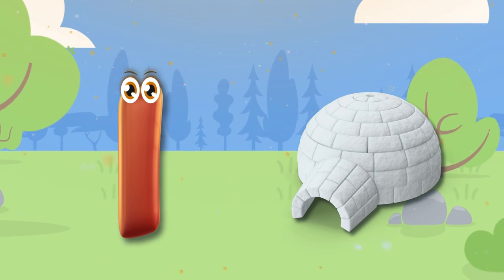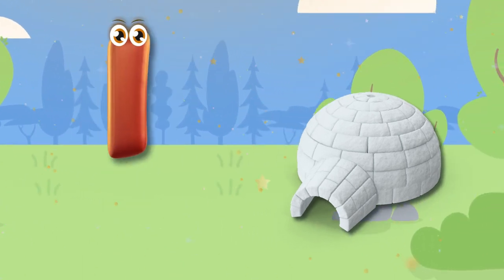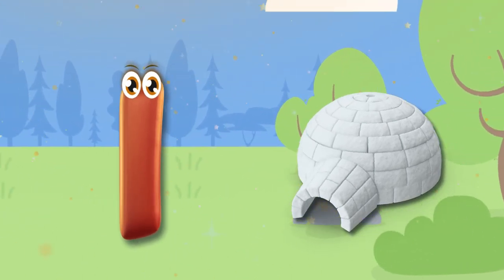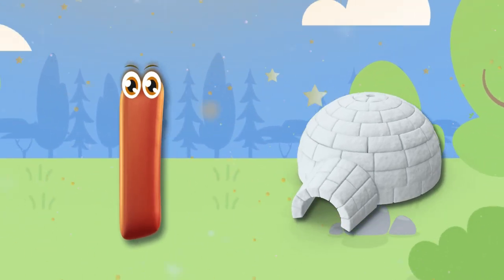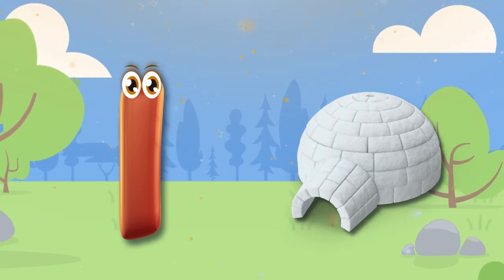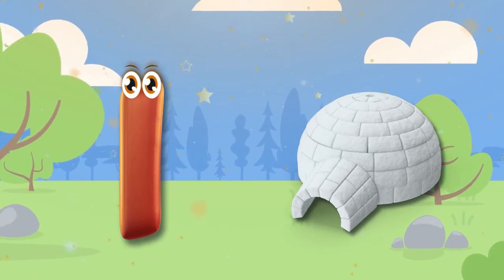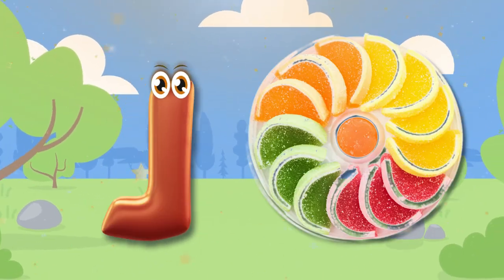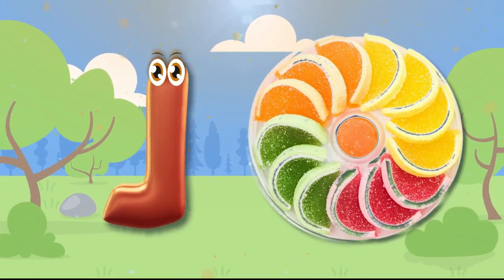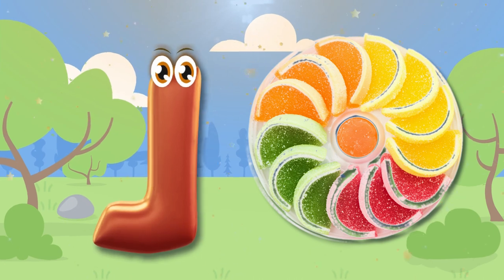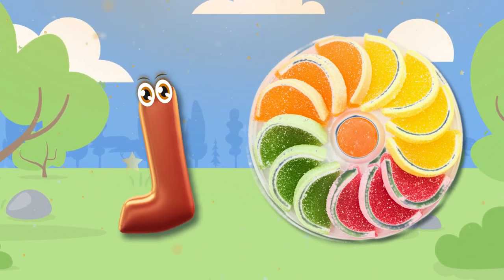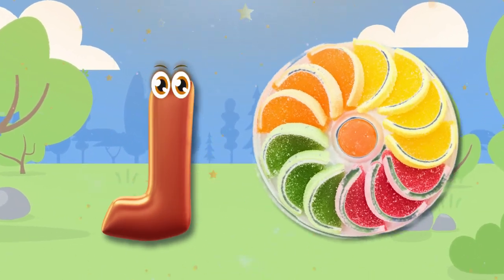I is for Igloo. I, Igloo I, I, Igloo I, Igloo. J is for Jelly. J, Jelly J, Jelly J.